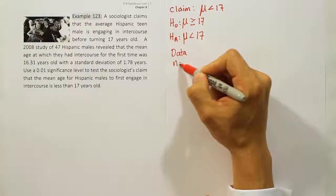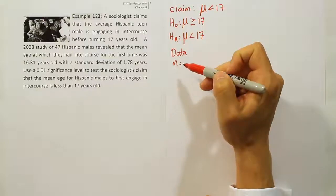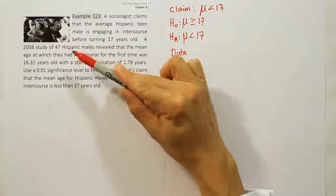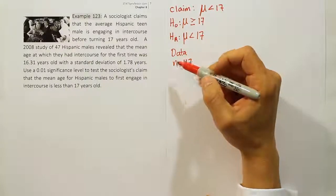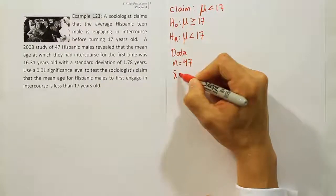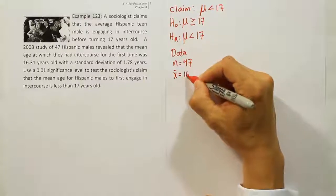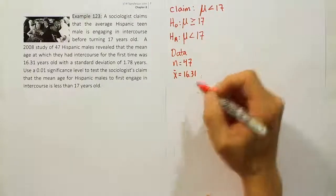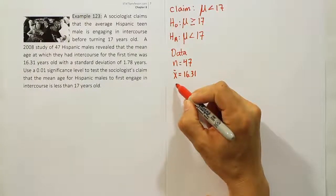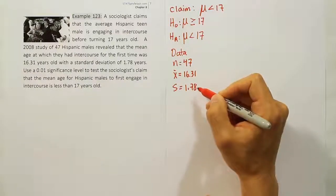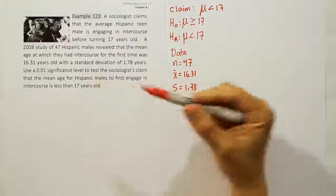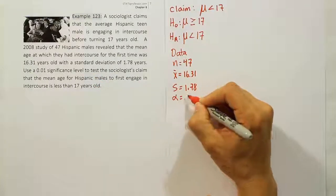Our data here will be N equals... What's the sample size for the problem? It looks like they looked at 47 Hispanic males. Then they went on to calculate a sample mean for the group. It says that that was 16.31 years old. And the standard deviation, they say, is 1.78. And then they go on to give us a 1% significance level. So alpha is 0.01.